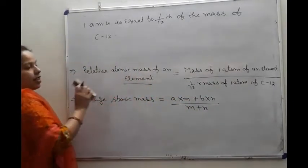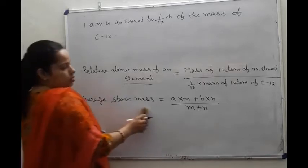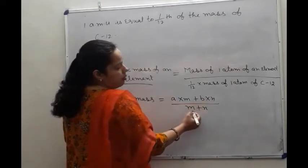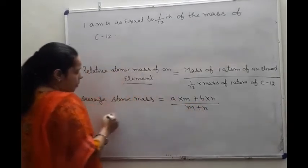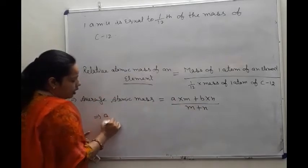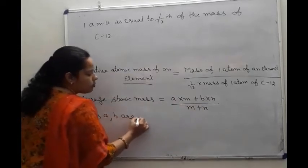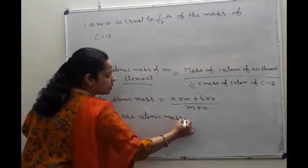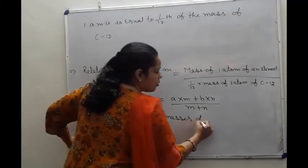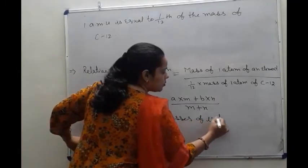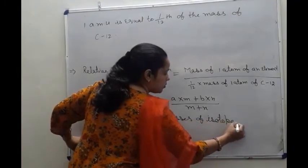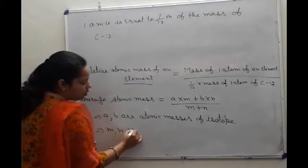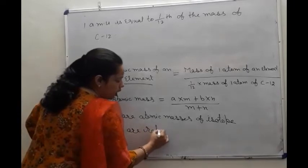Next is the average atomic mass. The average atomic mass formula is: (A × M + B × N) divided by (M + N), where A and B are the atomic masses of the isotopes, and M and N are the ratios of the isotopes.